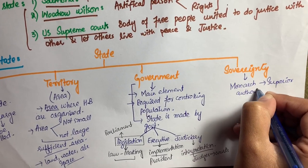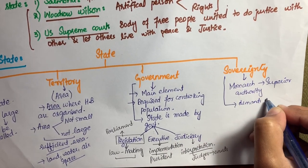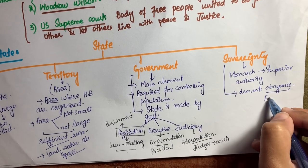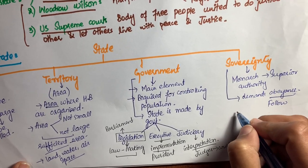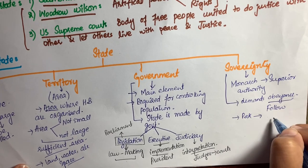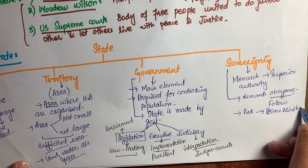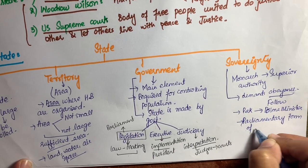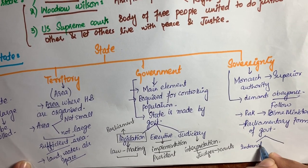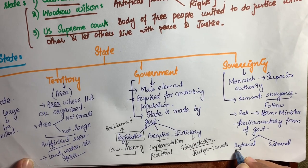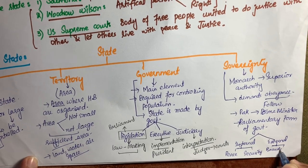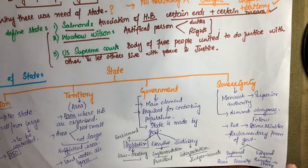The fourth essential is sovereignty. Sovereignty means a superior authority who demands obedience — the sovereign demands that people follow them. In Pakistan, the sovereign authority is the Prime Minister because Pakistan has a parliamentary form of government. Sovereignty is further divided into internal sovereignty and external sovereignty — internal peace and external security.